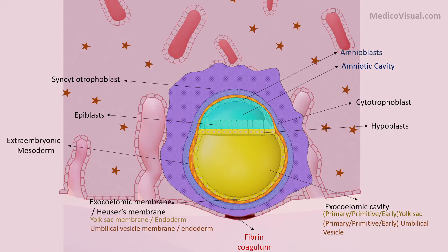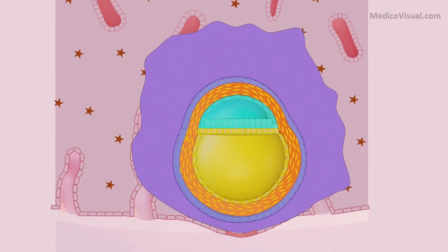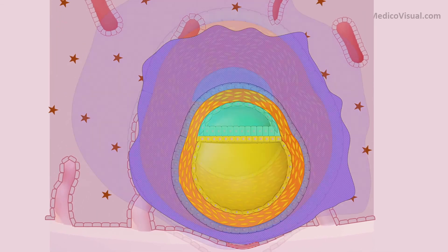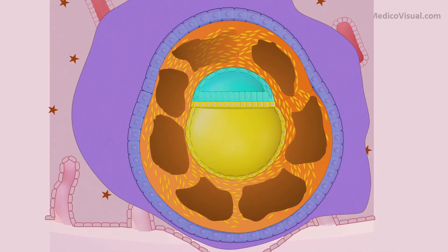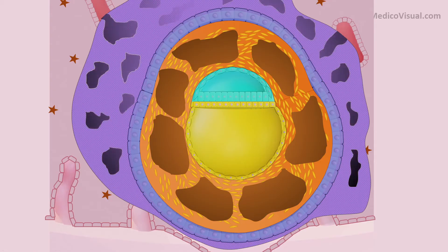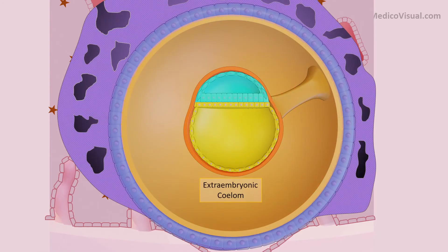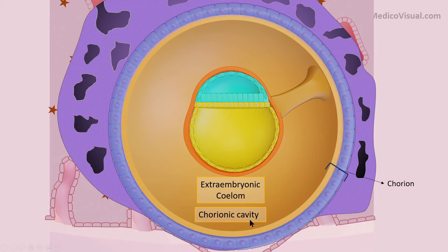This extraembryonic mesoderm further grows and proliferates. Small cavities begin to form within it, and an interconnected network of cavities also starts to appear within the syncytiotrophoblast. The cavities within the extraembryonic mesoderm coalesce to form the extraembryonic coelom, also called the chorionic cavity, as the outer membrane is called the chorion.